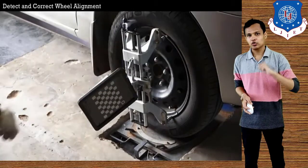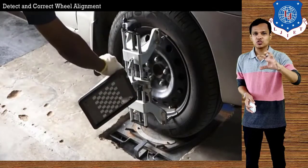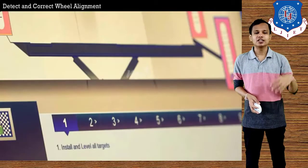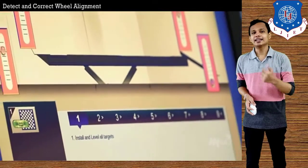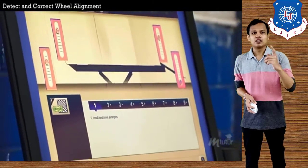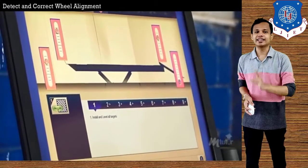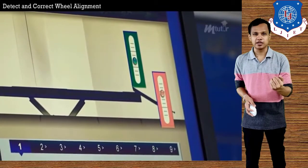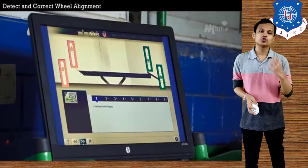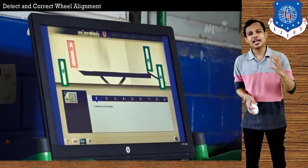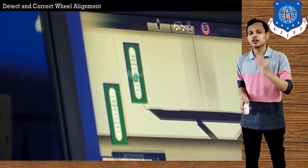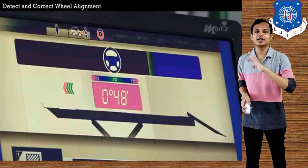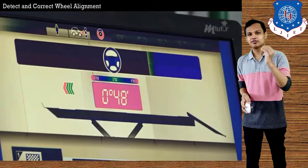We install the targets on all four wheels. The targets will be shown on the screen — all four targets are shown as red initially. Those four targets need to turn green after adjustment. Until all four targets show green readings, the wheel alignment is not complete. When all four turn green, that confirms all four wheels have been properly adjusted for wheel alignment.